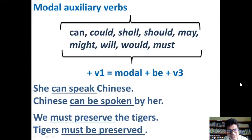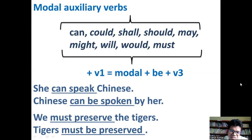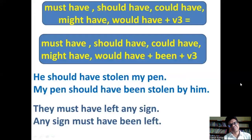'She can speak Chinese' — the main verb is 'speak' and 'can' is the modal verb. To change it: the object 'Chinese' comes to the subject position; the modal verb 'can' remains in the second position; then we add 'be'; then the past participle of the verb. So: 'Chinese can be spoken by her.' Another example: 'We must preserve the tigers' → 'Tigers must be preserved by us.'